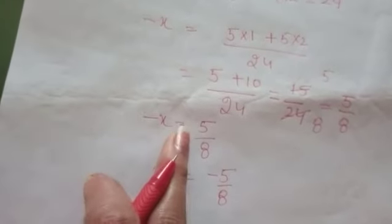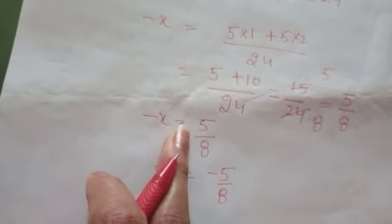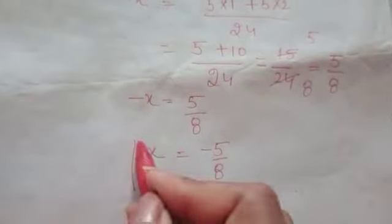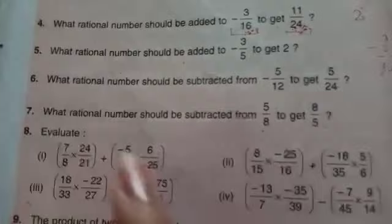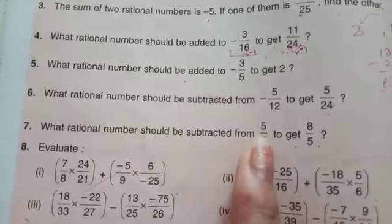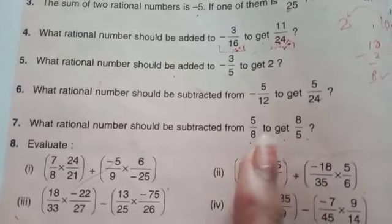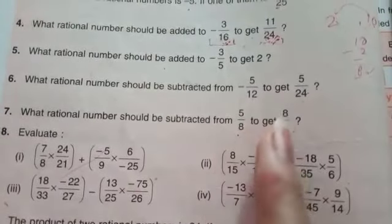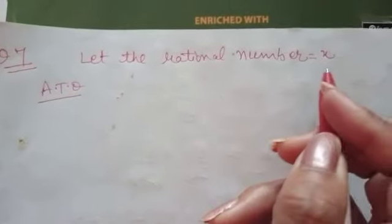We will get the value of x, so that is your answer. Next question: what rational number should be subtracted from this to get this? Means, what should we subtract from 5 over 8 to get this? We will let the rational number equal to x.